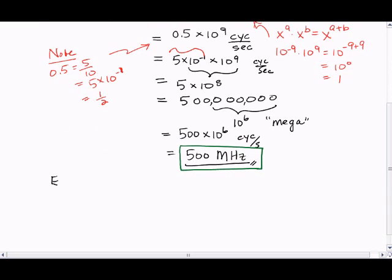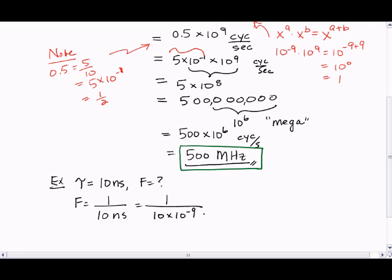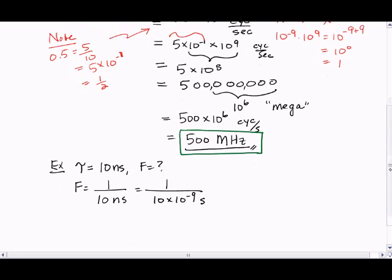Let's do another example. Suppose τ equals 10 nanoseconds. What is the frequency? So frequency equals 1 over 10 nanoseconds, which is equal to 1 over 10 times 10 to the minus 9 seconds.